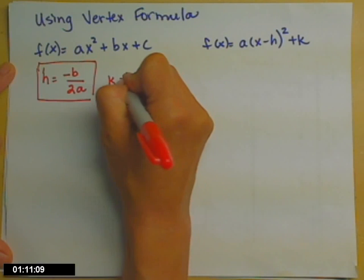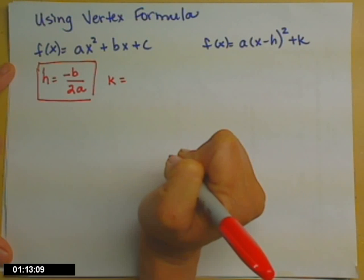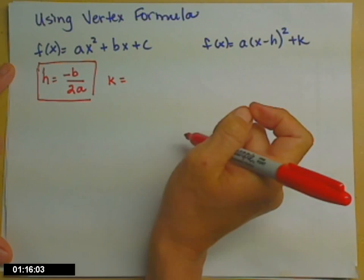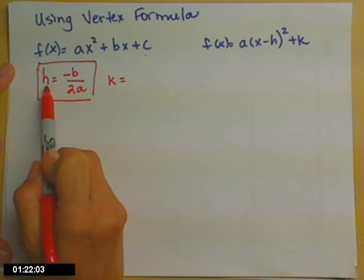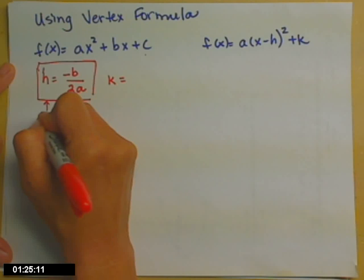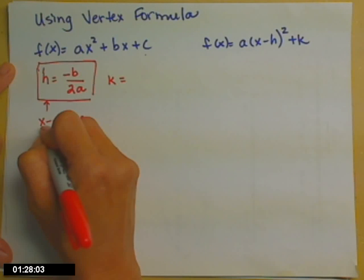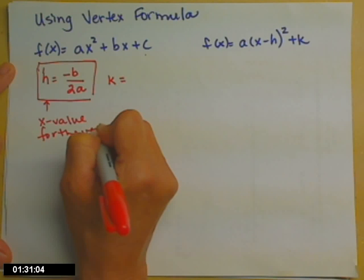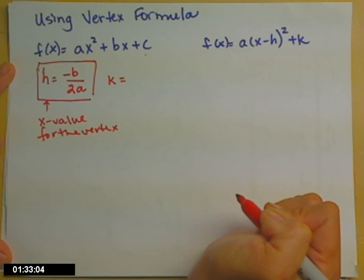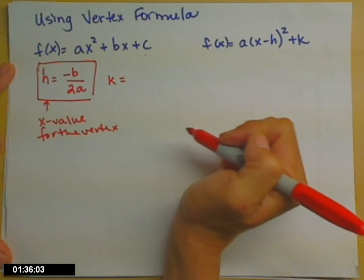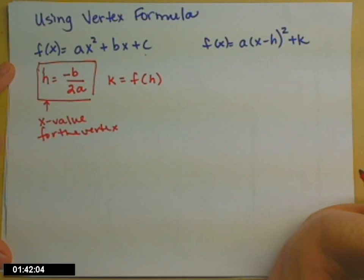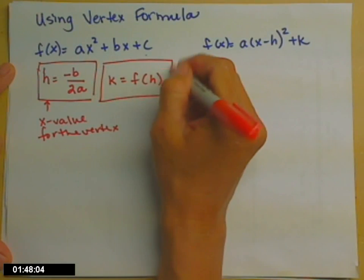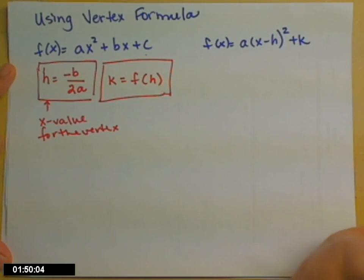Now, k has its own formula, and it's big, and I never remember what it is. But I do know that all points on my parabola have to work in both equations. So, h, this is an x value. This is the x value for the vertex. So, if I plug this x value, h, into my function that I know, that will tell me what its y partner is. And the y partner for the vertex is k. So, let's go ahead and see how that works.